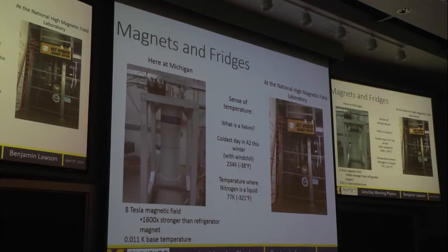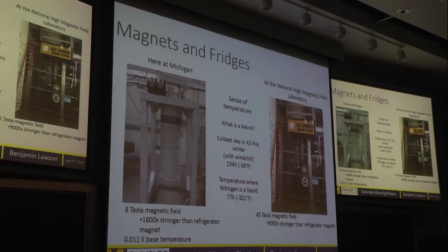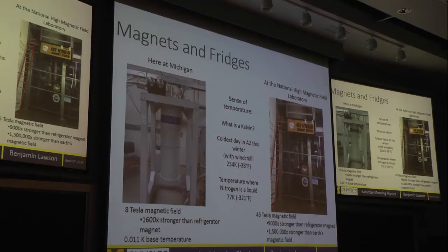We also use the facility at the National High Magnetic Field Laboratory in Tallahassee. This magnet is the most powerful constant field magnet in the world, and we at Michigan get to use it. This is a 45 tesla magnet — 9,000 times stronger than the magnets on your refrigerator and 1,500,000 times stronger than the Earth's magnetic field. This is a ridiculous magnet. It's super cool.